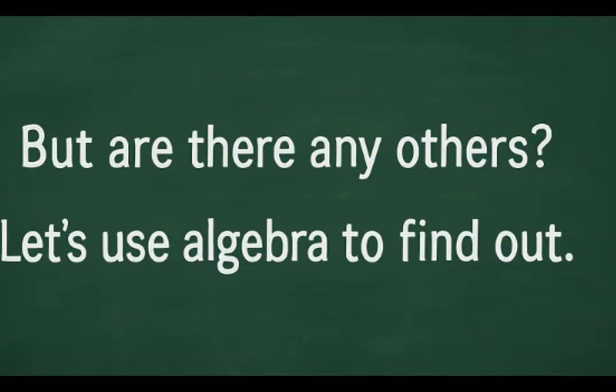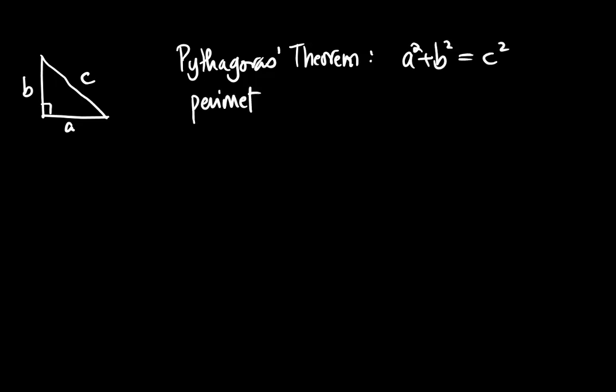Let's use algebra to find out. Let's say the triangle has sides A, B, and C, where C is the hypotenuse. In a right triangle, perimeter is A plus B plus C. Area is 1 half times A times B.